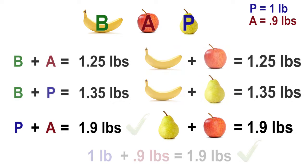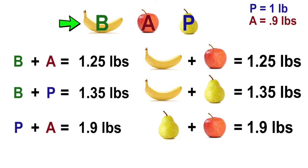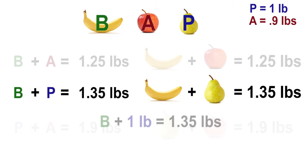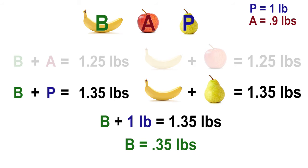The last piece of fruit to find the weight of is the banana. Let's use the second equation: b plus p equals 1 and 35 hundredths pounds. Substitute one pound for p. The equation now reads b plus one pound equals 1 and 35 hundredths pounds. The banana must weigh 35 hundredths of a pound. 35 hundredths of a pound plus one pound equals 1 and 35 hundredths pounds.